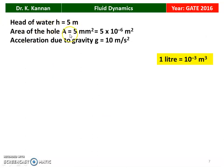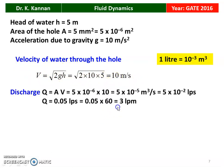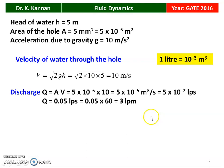Head of water H equals 5 m, area of the hole A equals 5 mm² which is 5×10⁻⁶ m², g equals 10 m/s². Velocity through the hole V equals √(2GH) = √(2×10×5) = 10 m/s. Discharge Q equals A×V = 5×10⁻⁶ × 10 = 5×10⁻⁵ m³/s, which equals 5×10⁻² liters/s, or 0.05 LPS. Then 0.05×60 equals 3 LPM. So the answer is 3 liters per minute.